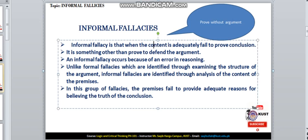Informal Fallacy is that when the content is adequately failed to prove the conclusion. It is something other than proof to define the argument. An Informal Fallacy occurs because of an error in the reasoning. Unlike Formal Fallacies, which are identified through examining the structure of the argument, Informal Fallacies are identified through analyzing the content of the premises. In this group of fallacies, the premises fail to provide adequate reasons for believing the truth of the conclusion.